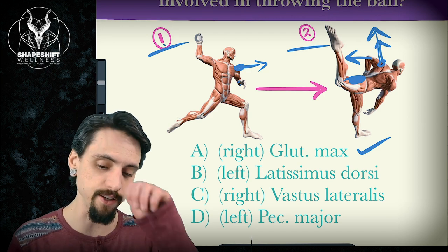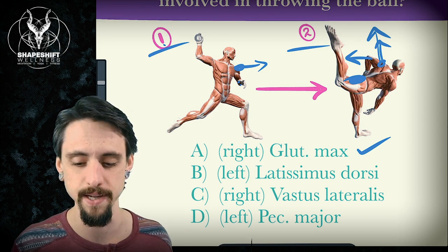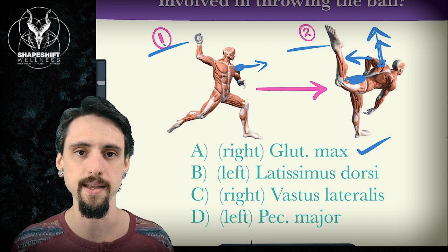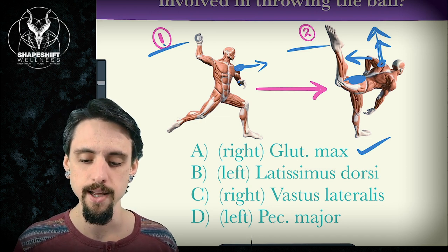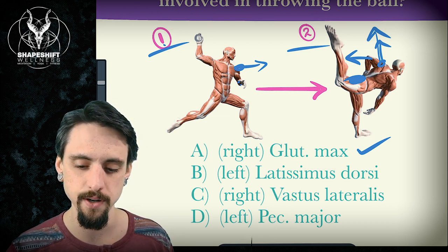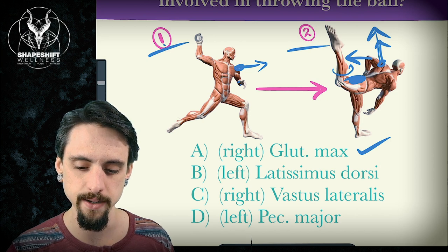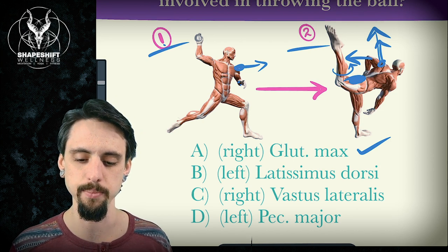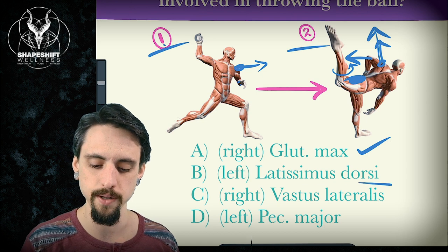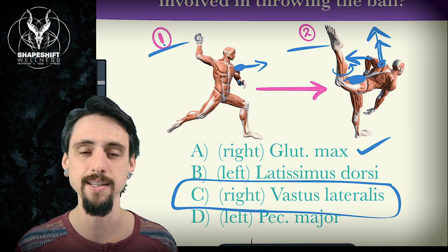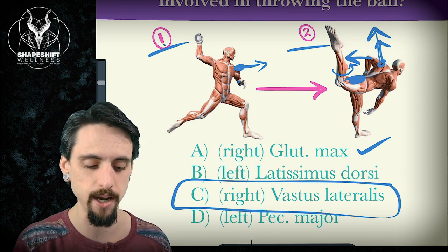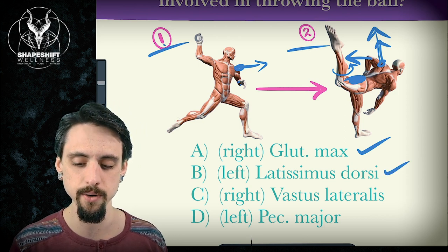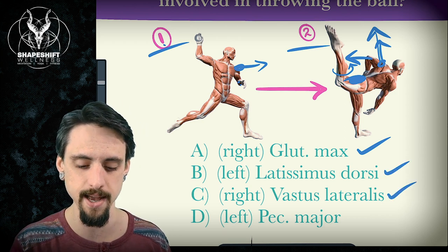And then the vastus lateralis on the right, this one's not so obvious. This is where we draw in the back functional line. But if you were to pay attention, then I think you would see that the right leg externally rotated a little bit. But more importantly, the right vastus lateralis is part of the back functional line, which we will explore in a moment. So it is working, even though it's not obvious, and I'll show you why in a second.